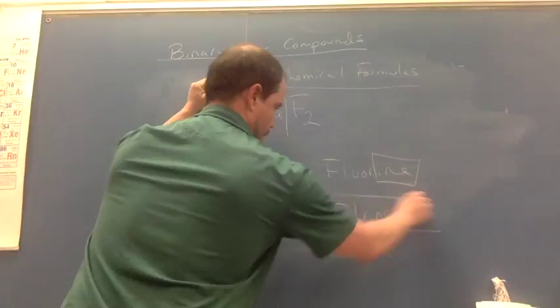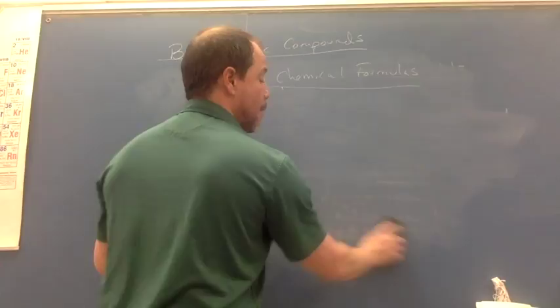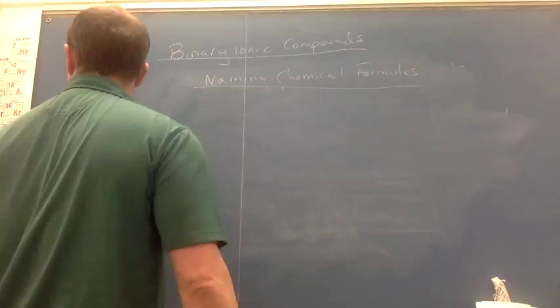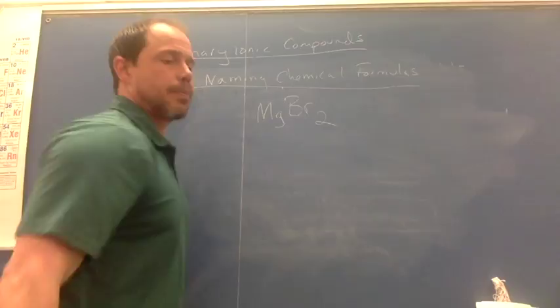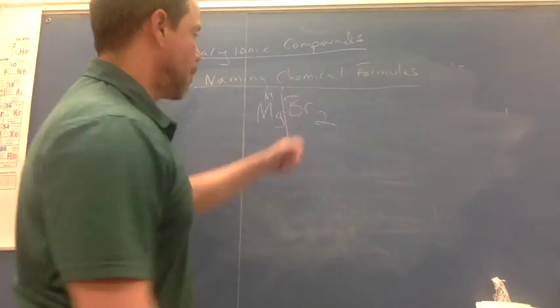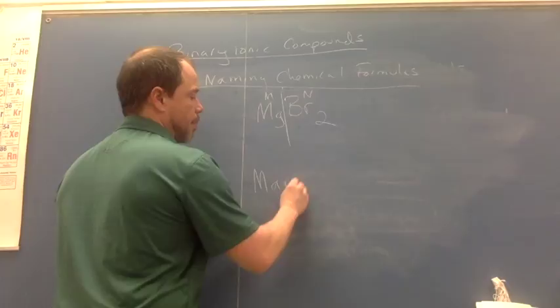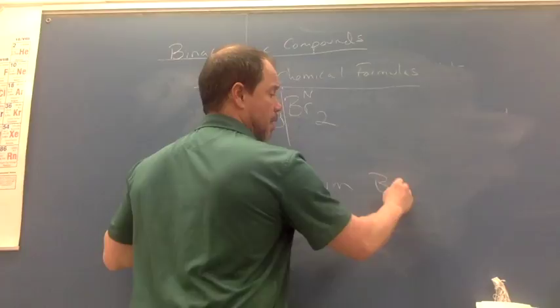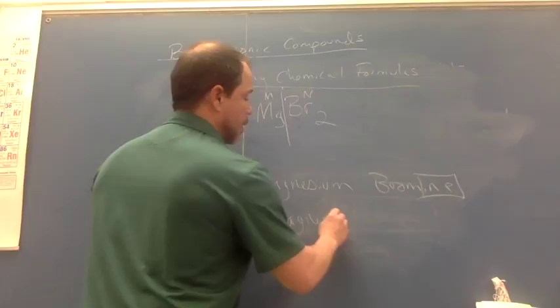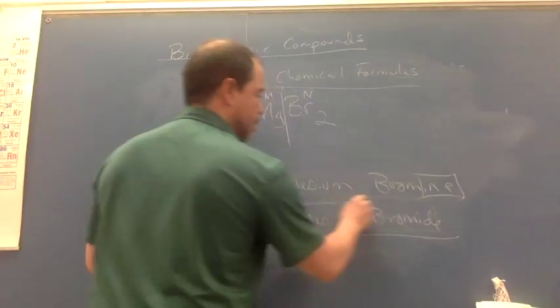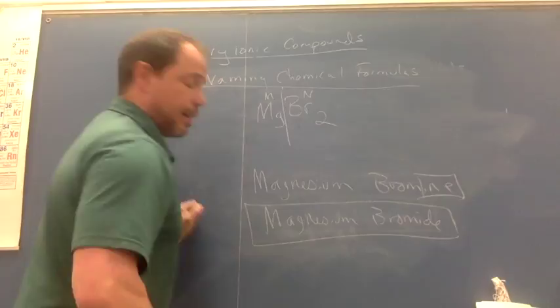One more: MgBr₂. First find the metal — magnesium. Then find the non-metal — bromine. Name the metal as is: magnesium. Remove the ending of bromine and add '-ide': bromide. So the name is magnesium bromide.